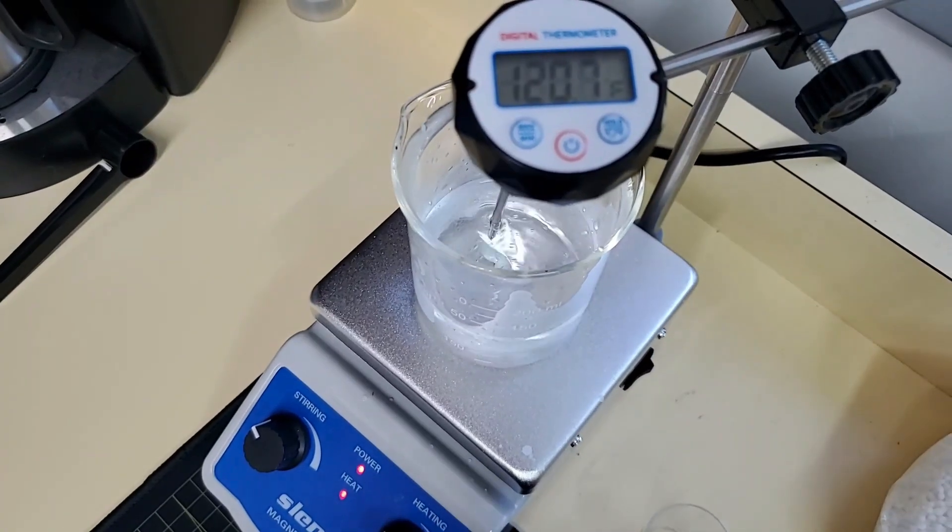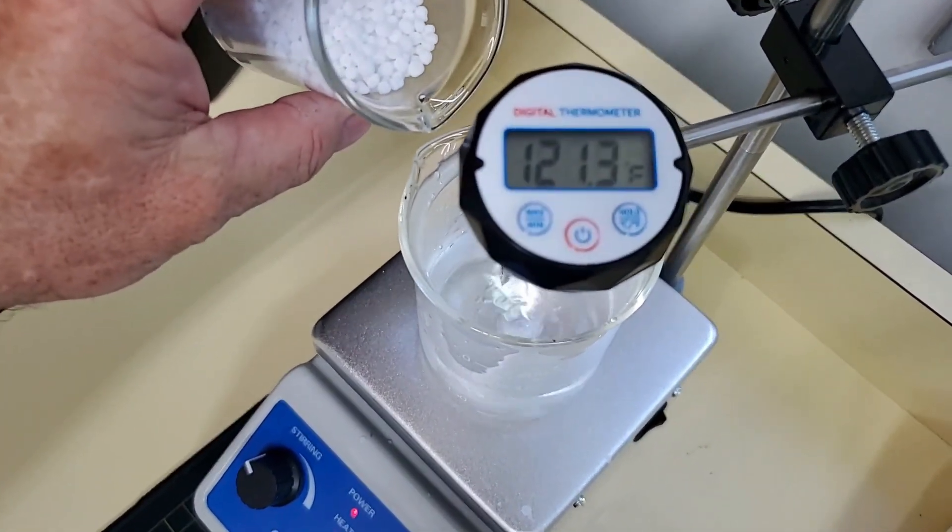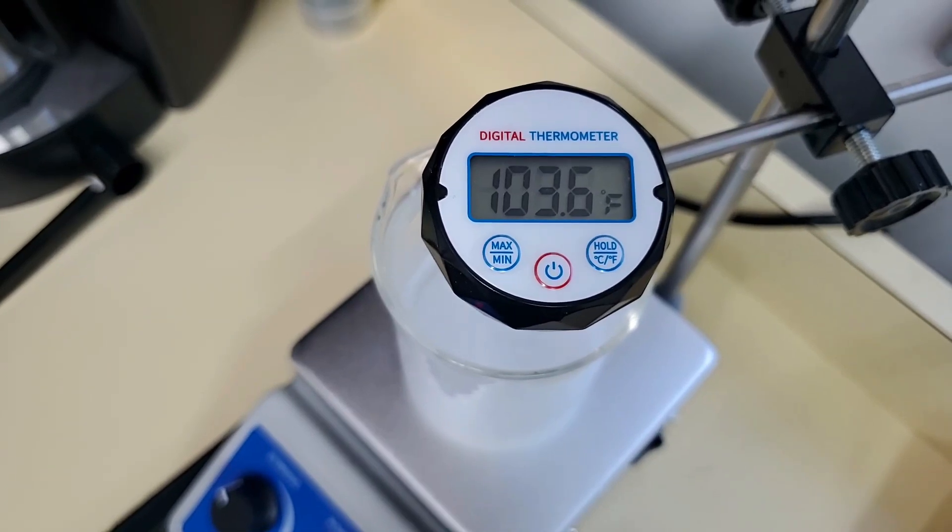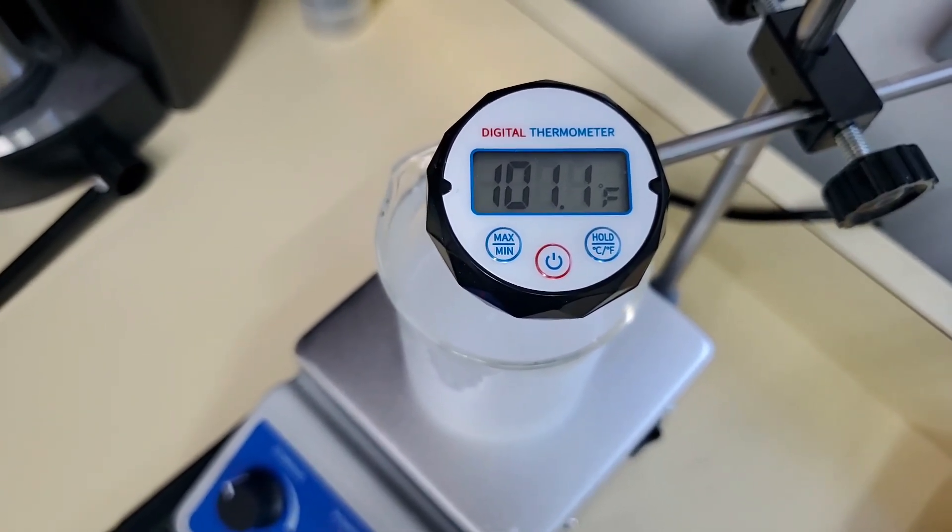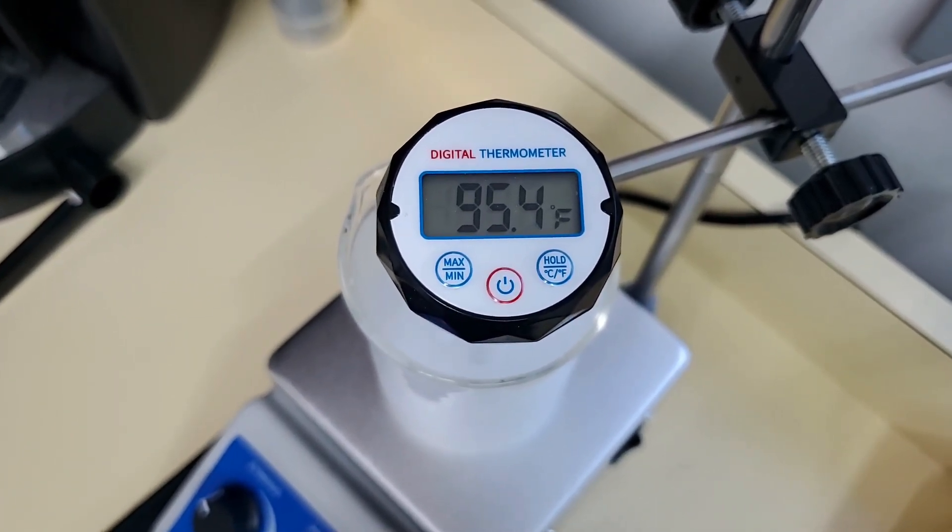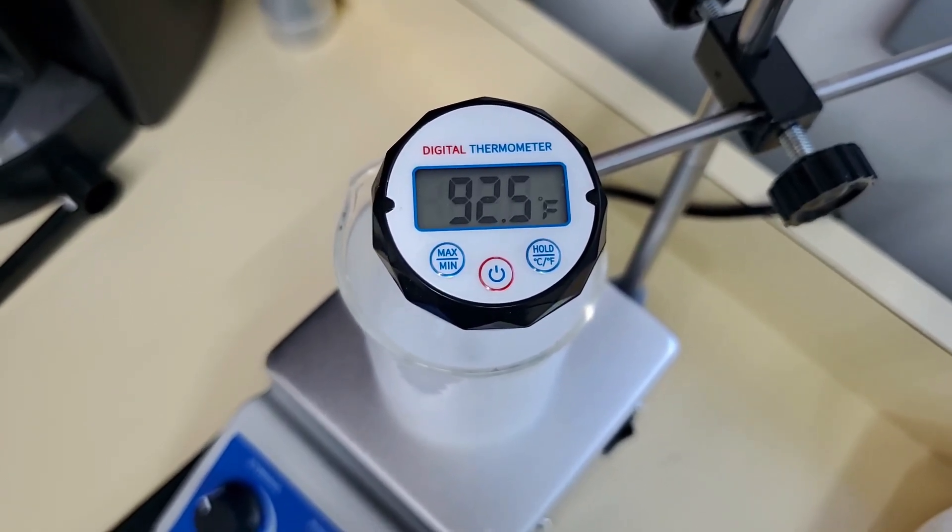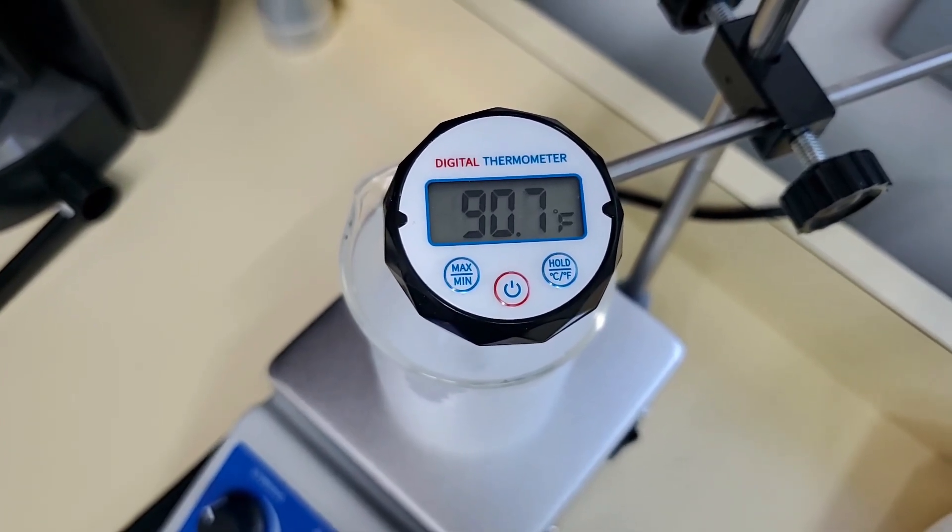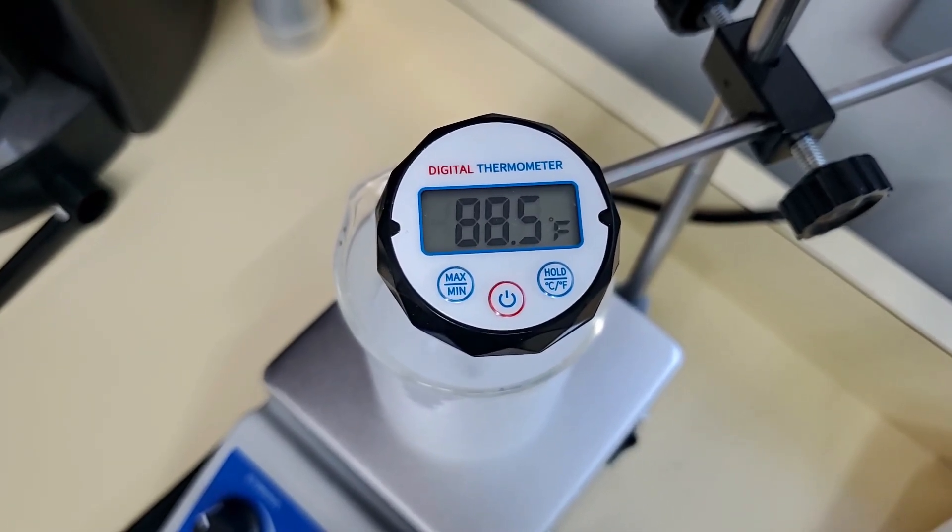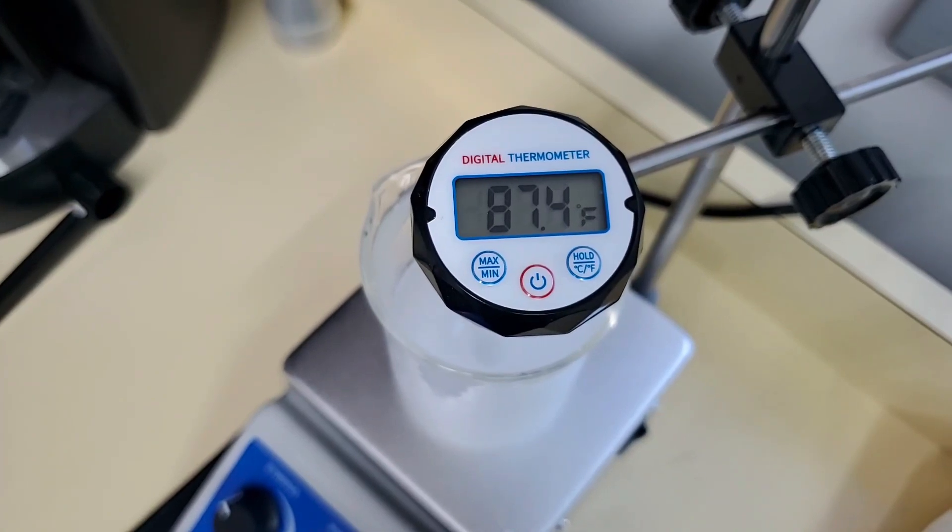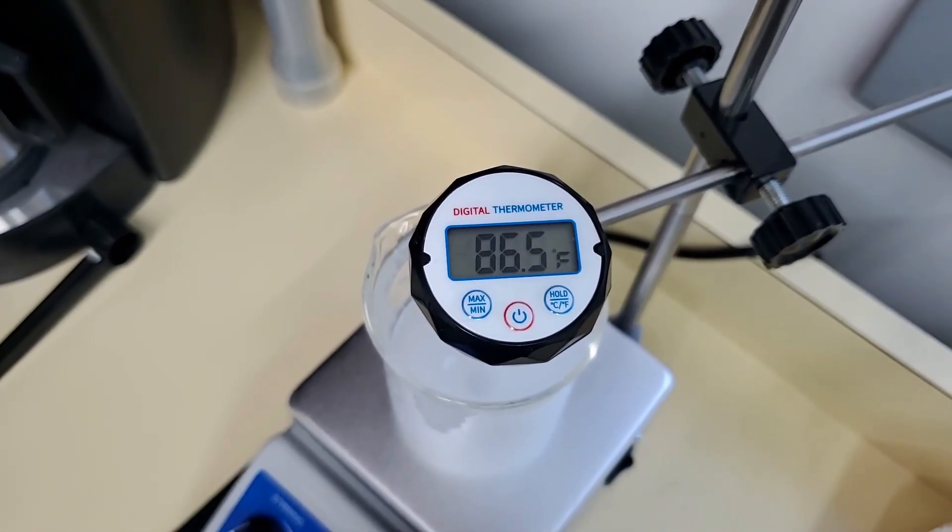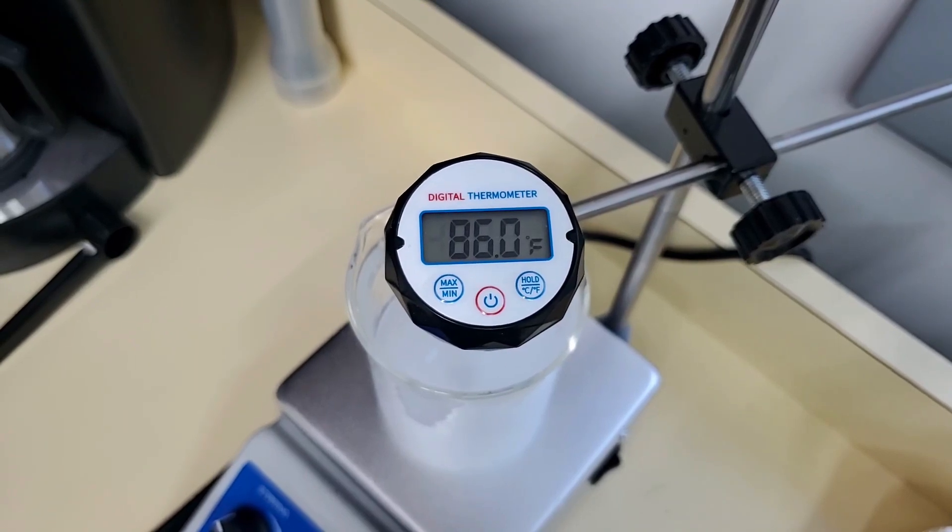We're at 120 now. I'm going to add the first half of the urea. You'll see how quickly it cools the water down. So what we're going to do is turn our heat back up, get that back up to 120 and then we'll add the other half of the urea.